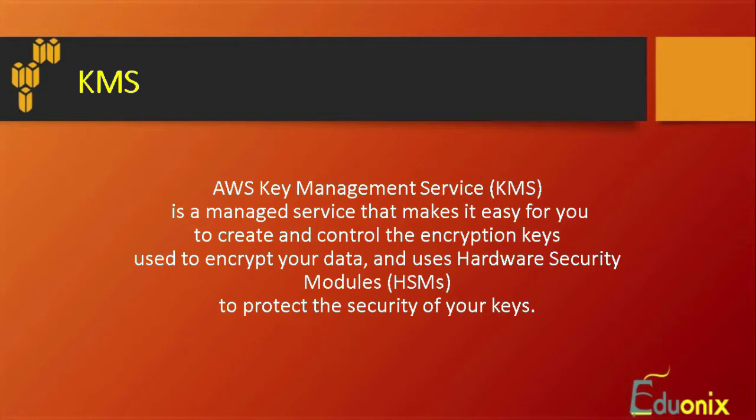KMS uses a hardware security model so that whenever you want to connect, you have a key which you locate at your hardware, and then you can share that key with your instance or database. The security creates two copies of a key — one located at your AWS and the other from where you are going to access the service. Once you provide the key, you will be able to access the service.